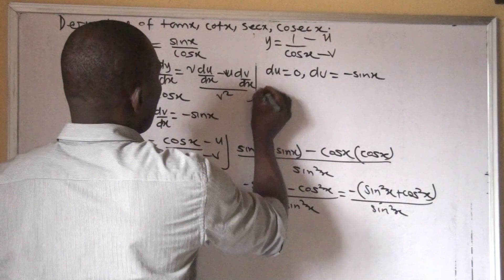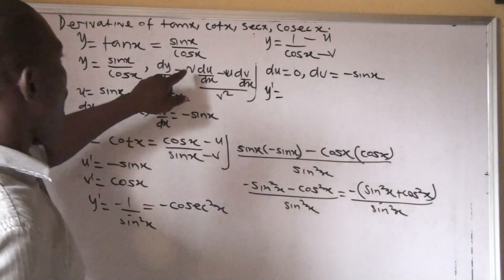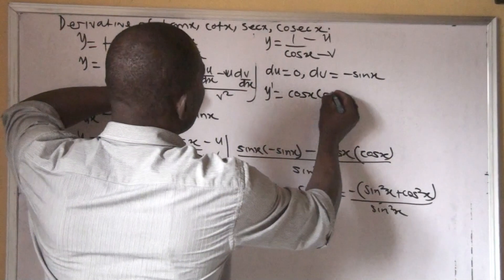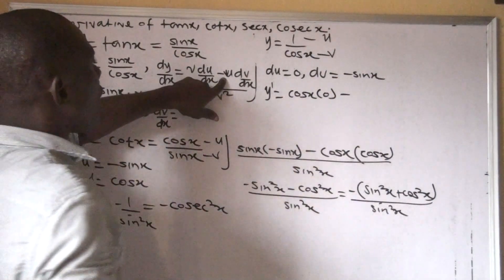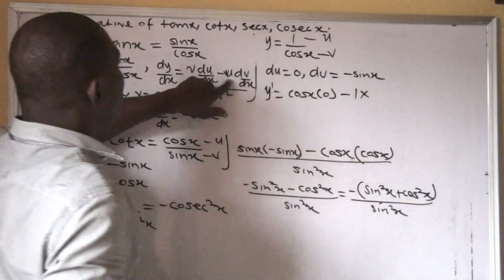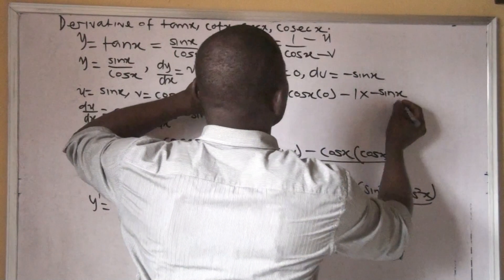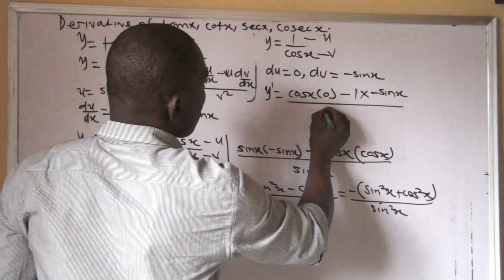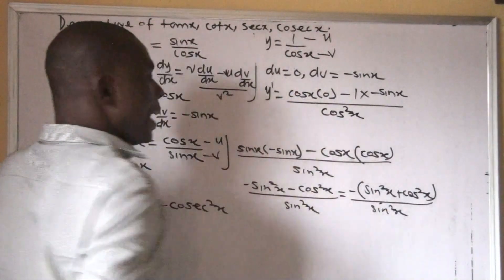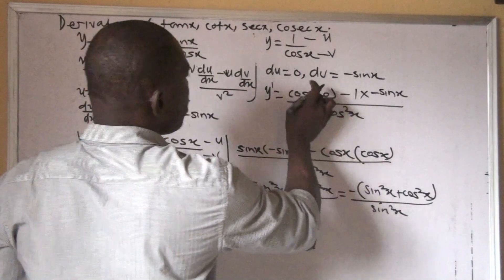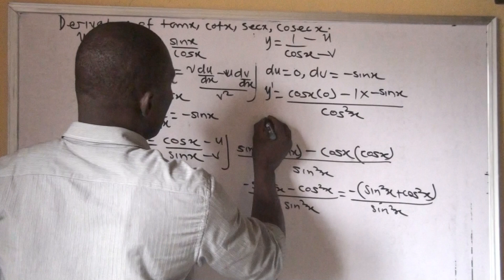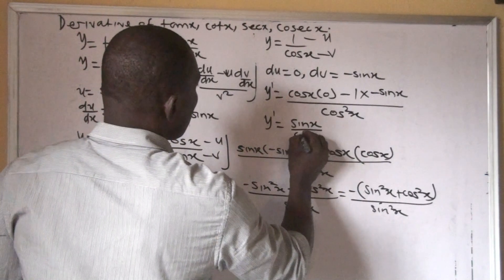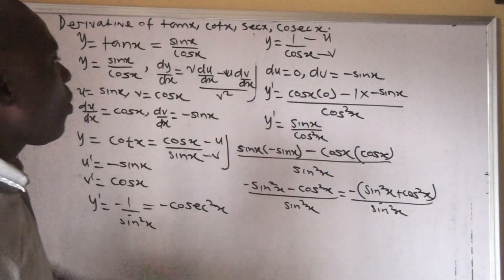Y prime becomes: our v is cos x, times du which is zero, minus u which is 1, times dv which is minus sin x, all over v squared, which is cos squared x. Zero times cos x is zero, so we need to simplify. This gives us sin x over cos x, times 1 over cos x.